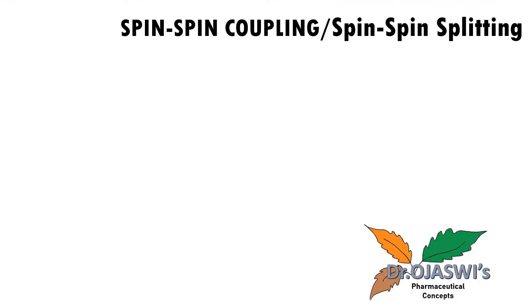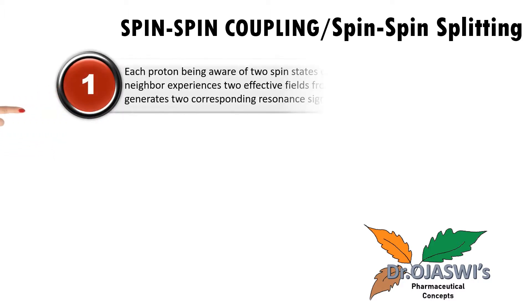Now what is spin-spin coupling? It is also called as spin-spin splitting. Each proton, being aware of two spin states of its neighbor, experiences two effective fields from it and generates two corresponding resonance signals.